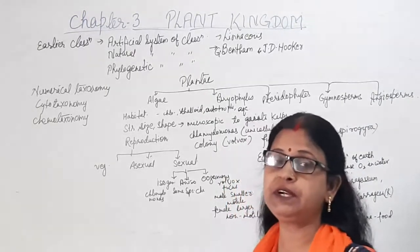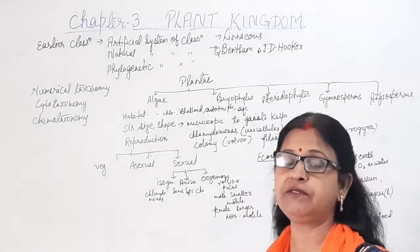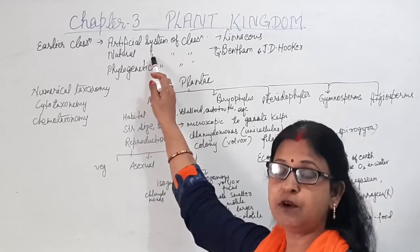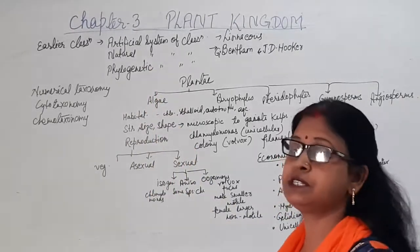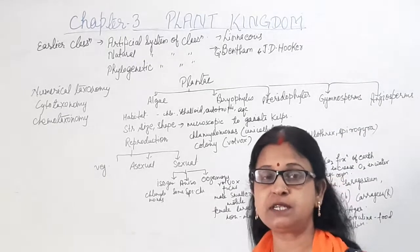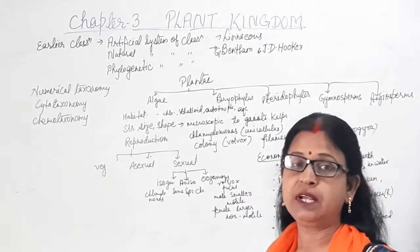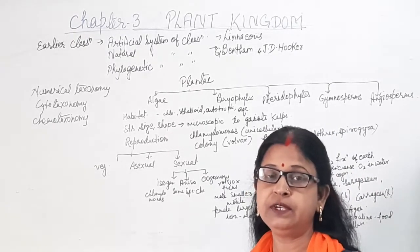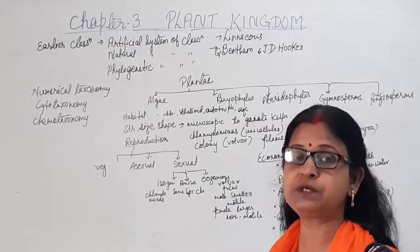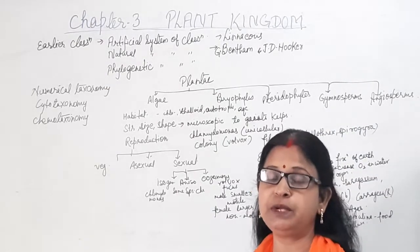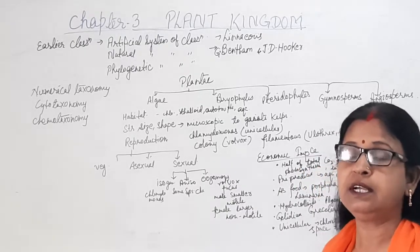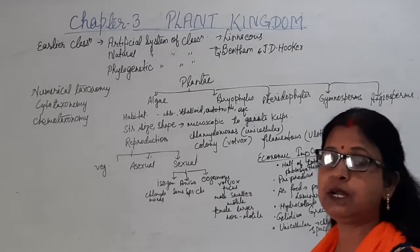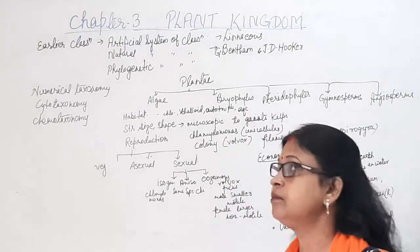Before that, we will discuss the different types of classification systems. The artificial system of classification was based upon morphological characters — superficial characters, shape and structure of the leaf, shape and structure of the embryo, etc. Internal structures such as anatomy and embryology were not included, and that's why it was known as the artificial system of classification, given by Carolus Linnaeus.